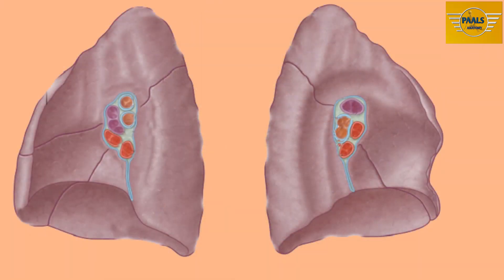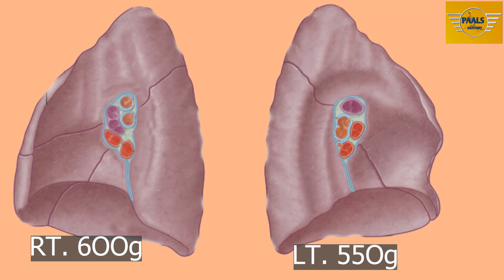The right lung is a little bigger than the left lung, averaging about 600 grams, while the left weighs about 550 grams. The adult lungs are spongy in texture and are crepitant to touch, as a result of the presence of air in their numerous alveoli. This is in contrast with the lungs of fetuses and stillborn children, where the lungs are solid in texture and do not crepitate when touched, as a result of the absence of air in the alveoli.